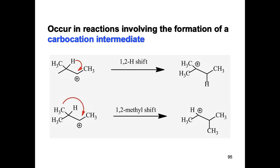Rearrangement reactions also occur in reactions involving the formation of a carbocation intermediate. For example, a 1,2-hydrogen shift occurs: the hydrogen shifts from C1 to C2, and the carbocation shifts accordingly. This is a rearrangement reaction. Another example involves a 1,2-methyl shift: the methyl group shifts to the adjacent carbocation site. Both are examples of rearrangement reactions.